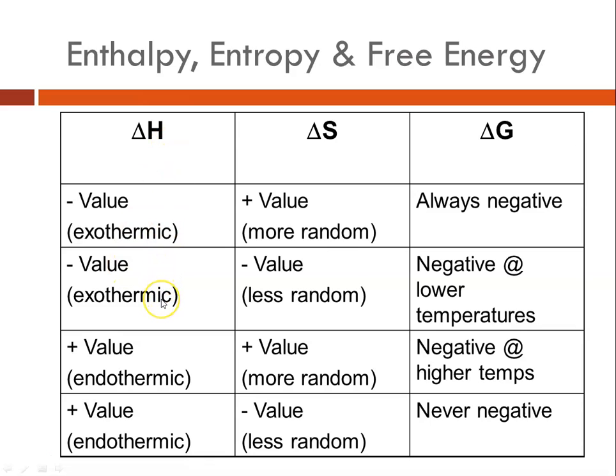If delta H is a negative value, and it's exothermic, and delta S is a negative value, meaning it's less randomness, so the delta S is decreased, then delta G will be negative at lower temperatures, so it could be spontaneous. If, in fact, delta H is a positive value, and delta S is positive, then it could be spontaneous at higher temperatures.